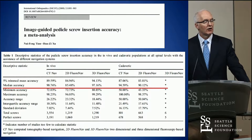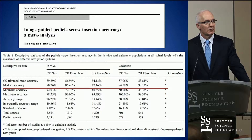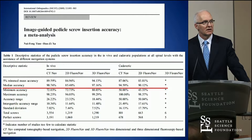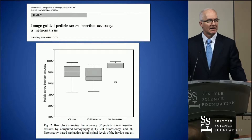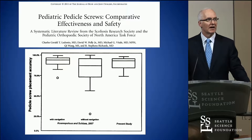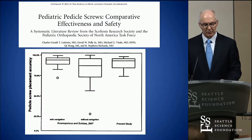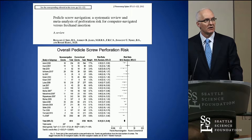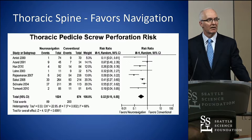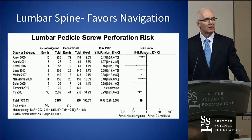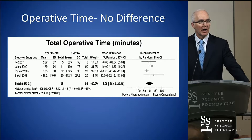Subsequent data from more recent studies show similar findings. CT-NAV did better. The bottom line shows navigation is better than without navigation. Looking at kids versus adults, similar findings, with subsequent analysis by Roger Hartle demonstrating that screw perforation risk has decreased with NAV in both the thoracic spine and the lumbar spine.